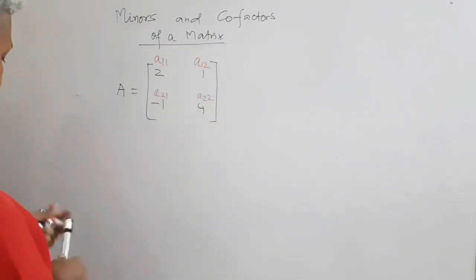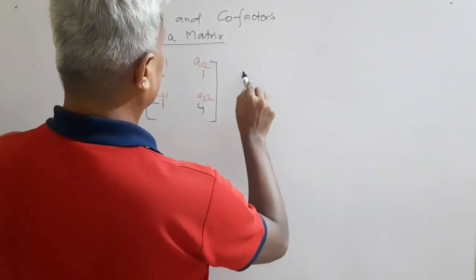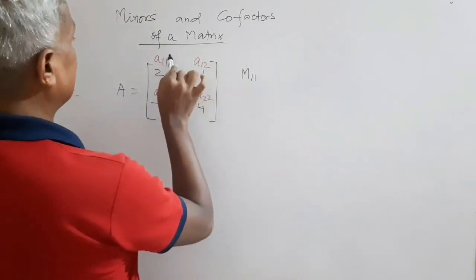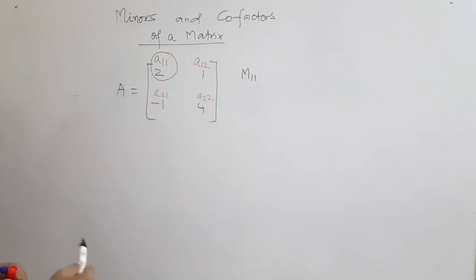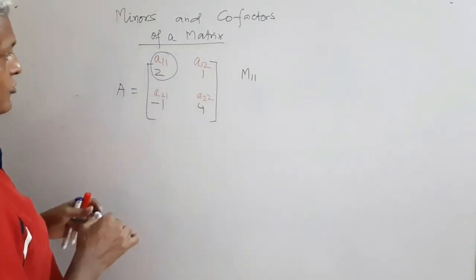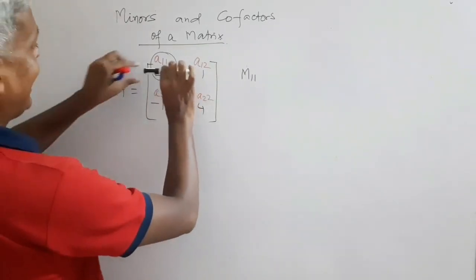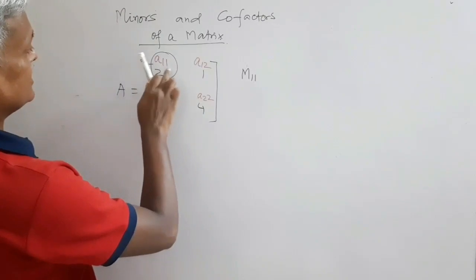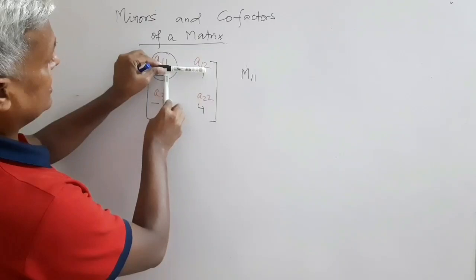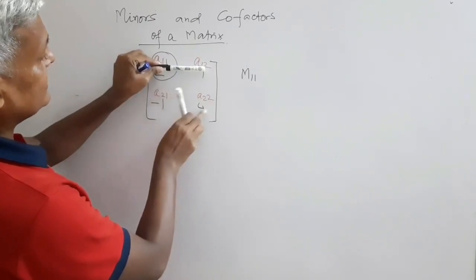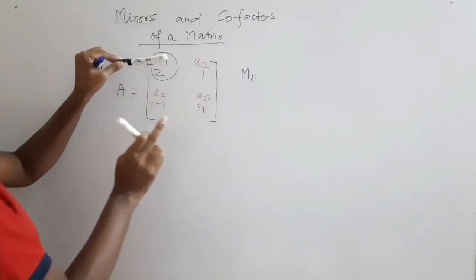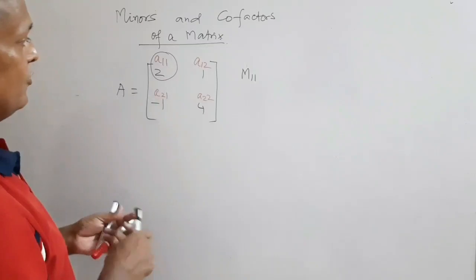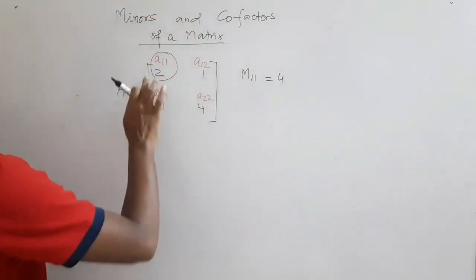Now, minors of a matrix. We represent the minor of element at position 1,1 as capital M11. To find M11, you cover or remove the entire row and the entire column to which the element belongs. So the first row is gone and the first column is gone. You are left with a smaller matrix — here just one element, 4. So M11 is 4. That is the minor of this element.